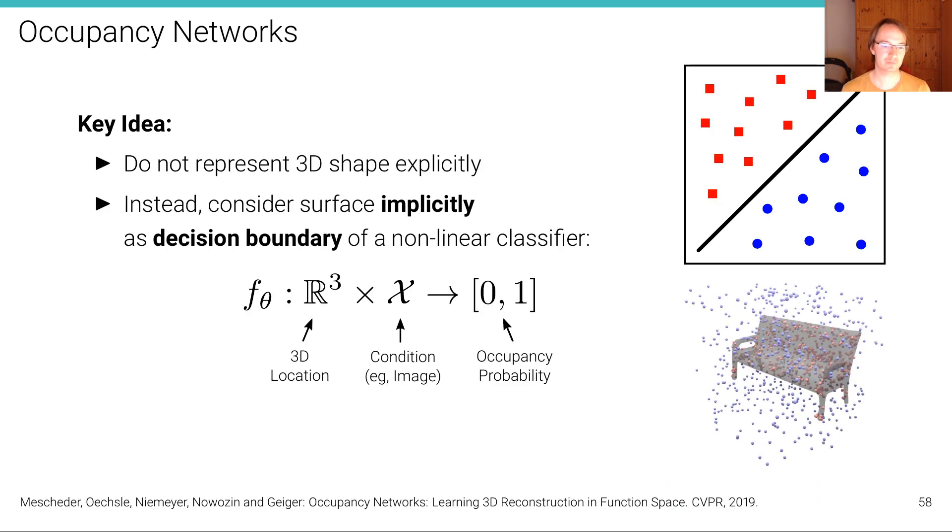So the key idea of the paper Occupancy Networks that we proposed in CVPR 2019 was to not represent 3D shape explicitly, but instead consider the surface implicitly as the decision boundary of a non-linear classifier. Basically, we want to train a classifier where the decision boundary separates the points inside in red from the points outside in blue.